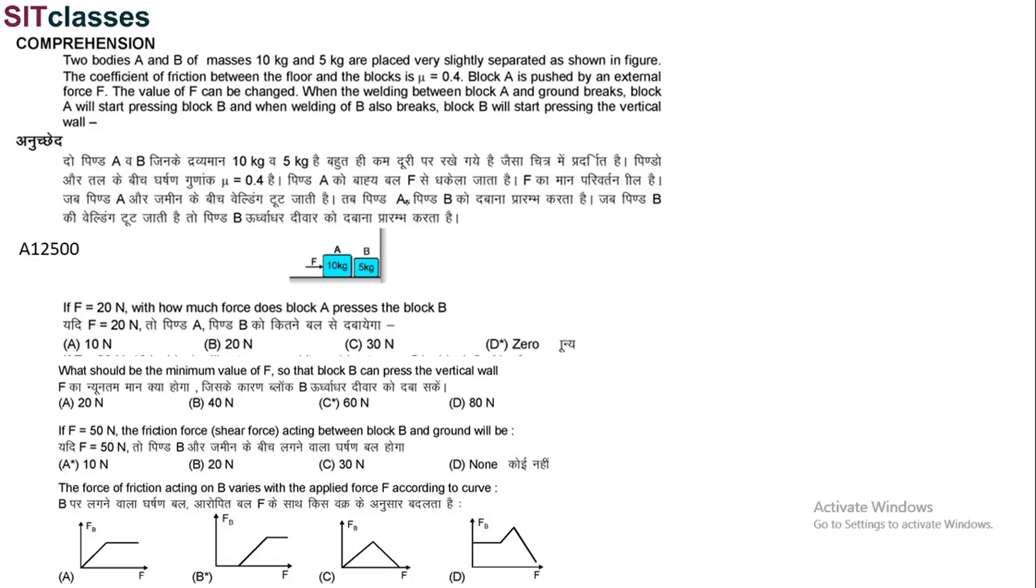Two bodies A and B of masses 10 kg and 5 kg are placed very slightly separated as shown in the figure. The coefficient of friction between the floor and the blocks is mu equal to 0.4. Block A is pushed by an external force F. The value of F can be changed. When the friction between block A and the ground breaks, block A will start pressing block B, and when the friction of B also breaks, block B will start pressing the vertical wall.